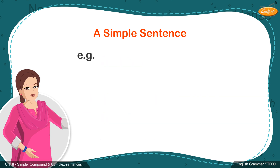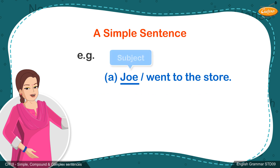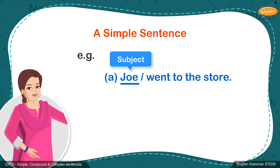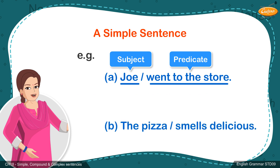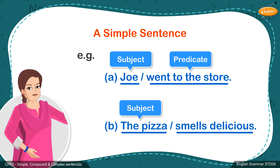For example, in the sentence, Joe is the subject and went to the store is the predicate. Similarly, in the sentence, the pizza is the subject and smells delicious is the predicate.